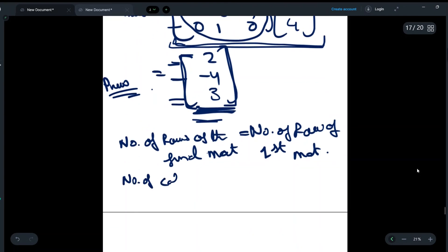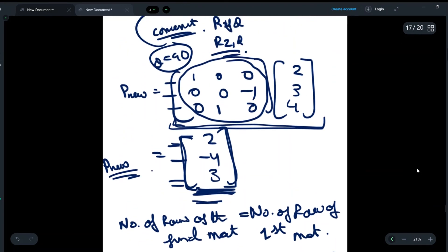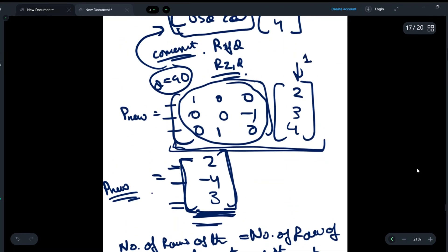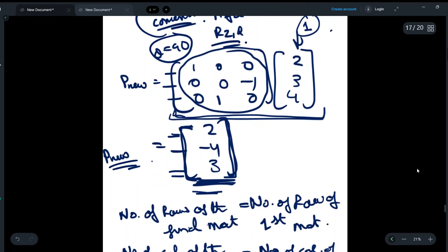In order to find the columns, the number of columns of the final matrix is equal to the number of columns of the second matrix that we are multiplying. Here we have only one column, so in the final answer we will have only one column. This is a simple trick so you won't get confused about how many rows and columns the final matrix will have.